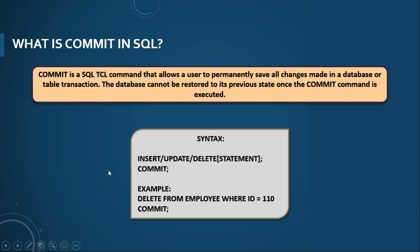The commit command in SQL is a transaction command used to save all the changes made by a particular transaction in RDBMS since the last commit or rollback. It signifies the end of a successful transaction. The commit command is generally used after DML operations like insert, delete, and update. When you perform a DML operation without a commit statement, the changes are only visible to you. Once you use a commit command, the changes are visible to other database users as well.